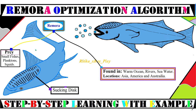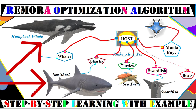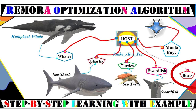Remora often feed on parasites, planktons, and squids, and they are found in Asia, America, and Australia in river and sea water. As they use the host body for their survival, they commonly use big fishes such as whales, sharks, swordfish, manta rays, and sea turtles as their hosts. Sometimes they accidentally get attached to boats, and when no food is offered they let go in disappointment.